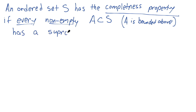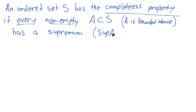Remember, the supremum is an upper bound — in fact, it is a least upper bound. Another way of saying this is that sup A exists. "Sup" is the supremum notation we use sometimes. So there it is — that's the completeness property.